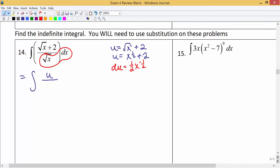What we have doesn't look quite like the extra part we have floating around, so let's get rid of that 1/2. In order to do that, we can multiply both sides by 2. So 2 du equals x to the negative 1/2 power dx.